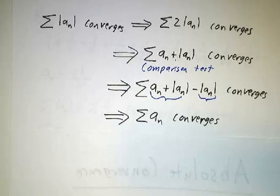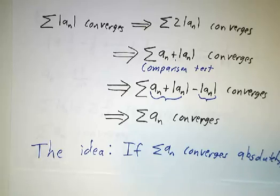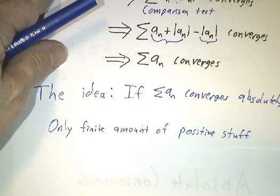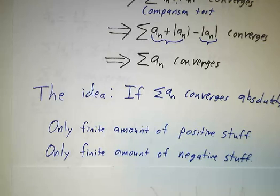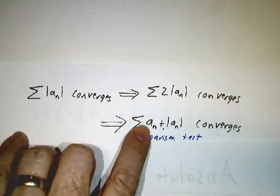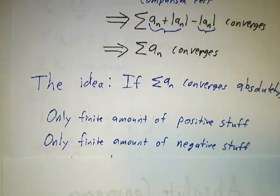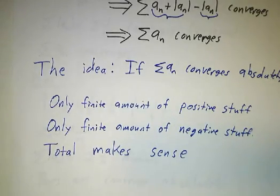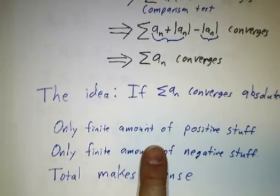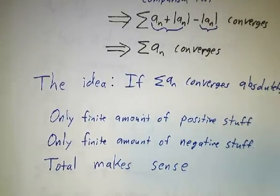So if it converges absolutely, it converges. Now, I gave you a proof, but you might still be wondering why it works. The idea is that if it converges absolutely, then what you're adding up is only a finite amount of stuff. The positive terms only add up to a finite amount. This is twice all the positive terms, and that only adds up to a finite number. Likewise, the negative terms only add up to a finite amount. So you take a finite amount of positive stuff, subtract off a finite amount of negative stuff, and you get a total that makes sense. That isn't a rigorous proof, but it kind of explains what's going on.